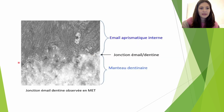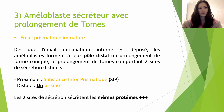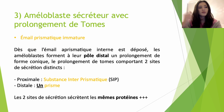On voit la jonction entre l'émail et la dentine avec la sécrétion du manteau dentinaire et la formation de l'émail aprismatique interne où les cristaux ne sont pas encore organisés et n'ont pas d'orientation particulière. L'améloblaste sécréteur sans prolongement de Tome va évoluer en améloblaste sécréteur avec prolongement de Tome, responsable cette fois-ci de la production d'un émail prismatique immature. Les améloblastes vont former à leur pôle distal un prolongement conique : le prolongement de Tome. Ce prolongement comporte deux sites de sécrétion distincts : un site proximal sécrétant la substance interprismatique, et un site distal sécrétant un prisme.